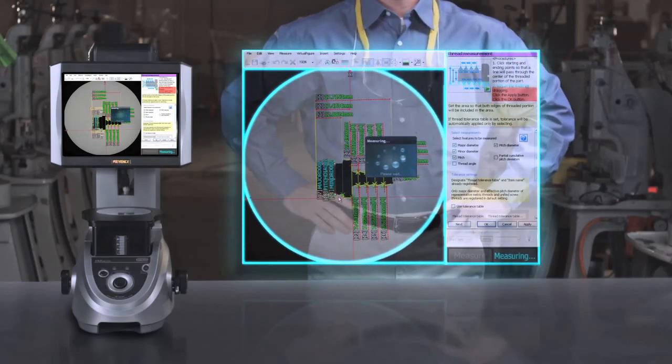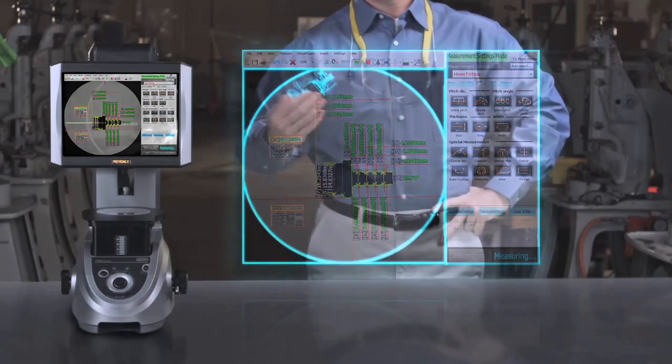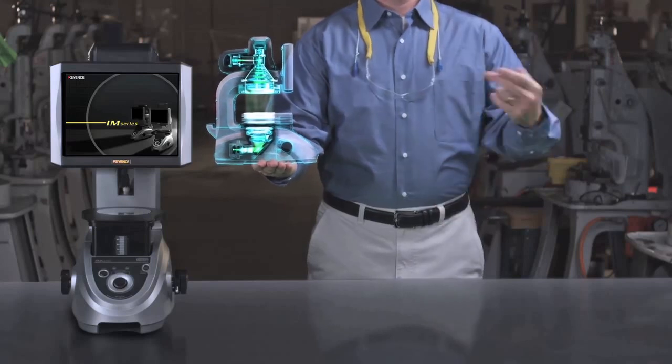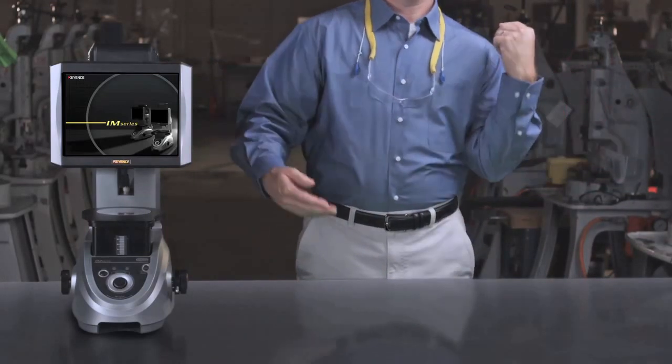For starters, programming the IM series takes less time than it does to measure a single part by hand. And its advanced lensing technology drastically reduces inspection time, taking the place of tools like calipers, optical comparators, and CMMs.